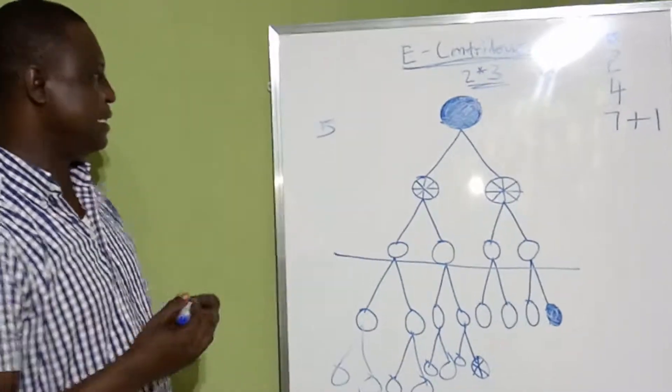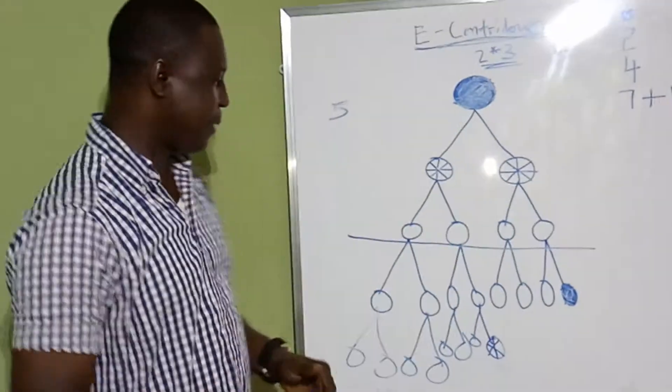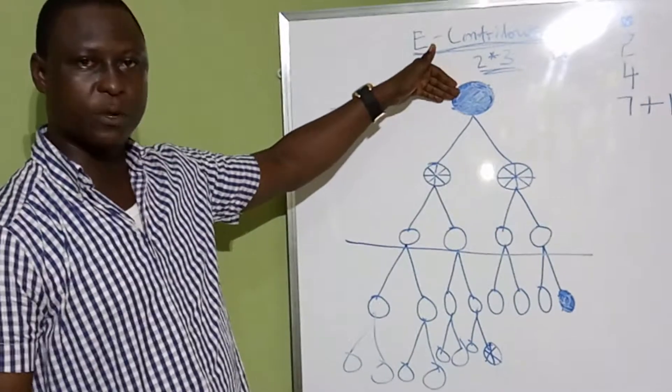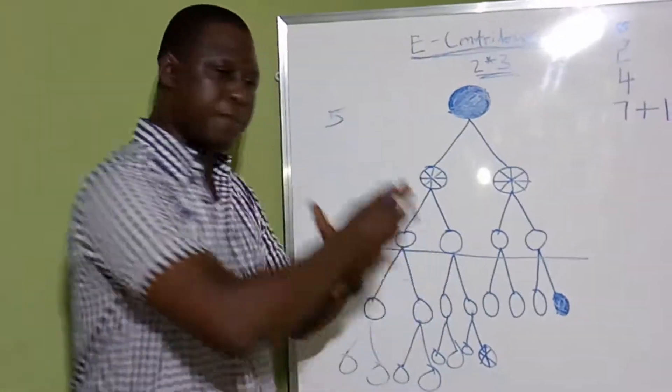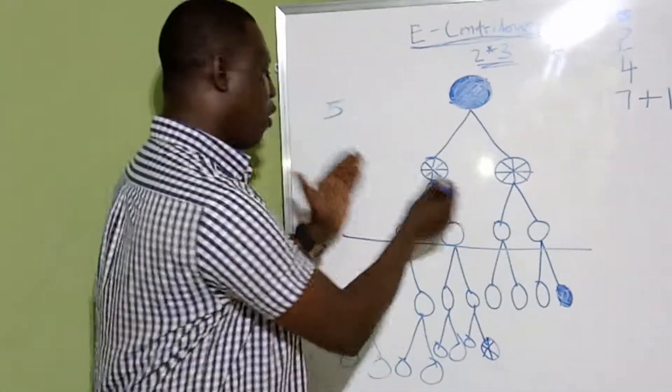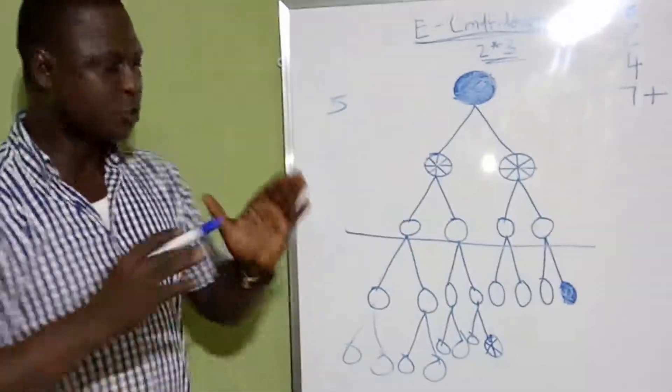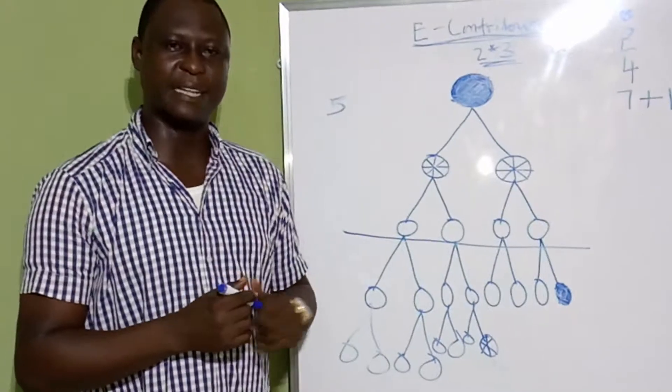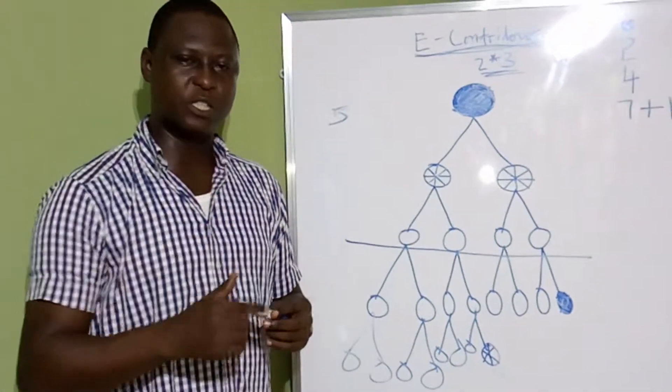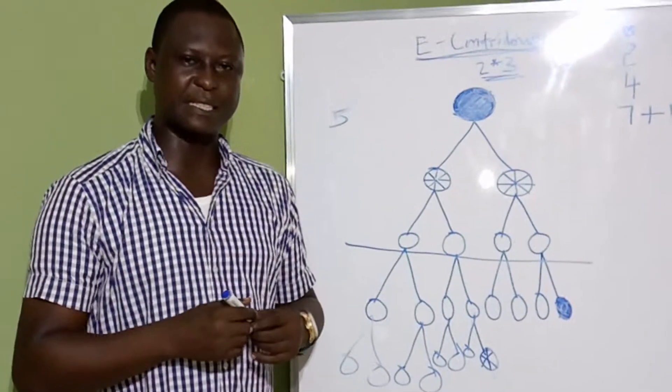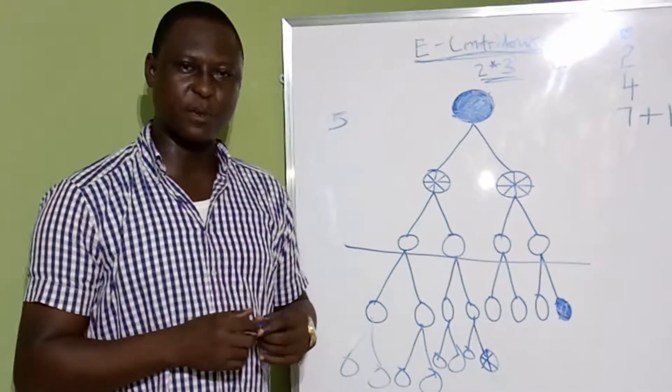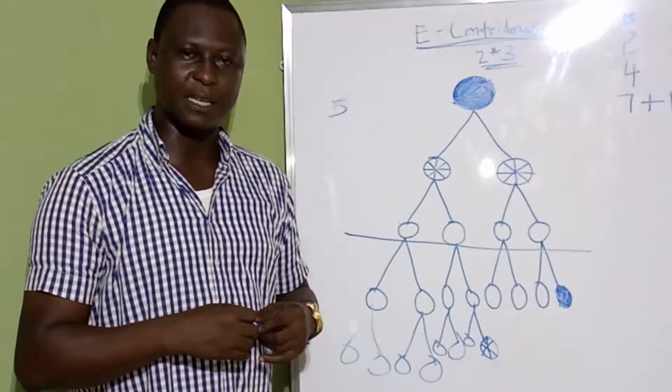So what we are saying is this is a contribution whereby the last contribute to the first. The first comes back to recycle. Then the system breaks into two, forming two different teams. So it keeps going on like that. That's the powerful system. I want you to watch out for it, and I want you to make sure you take part immediately the system comes out. Thank you very much. My name remains Prince Yemi Kasari.